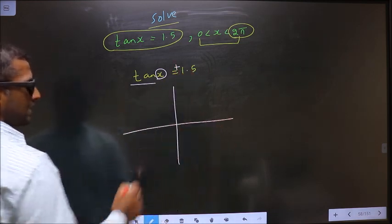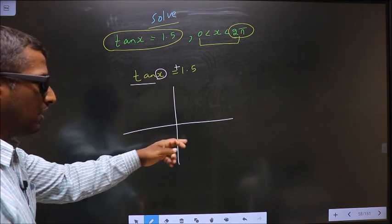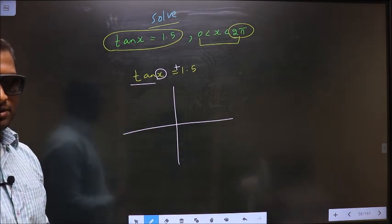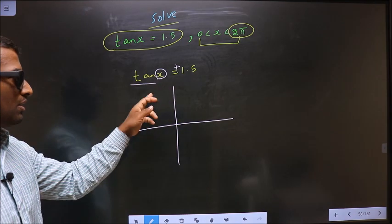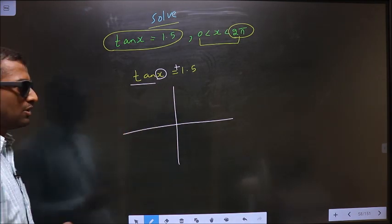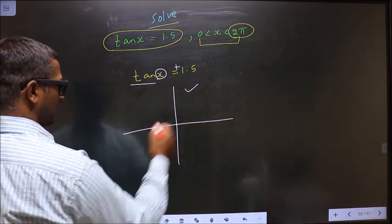So now you check in what all quadrants tan is positive. It's all silver tea cups. So tan is positive in the first and in the third.